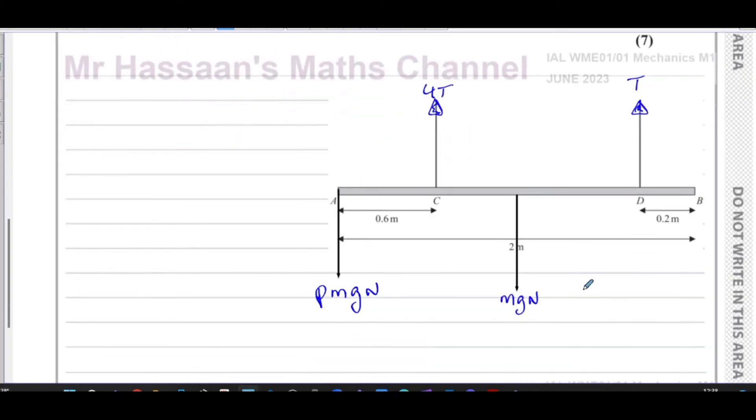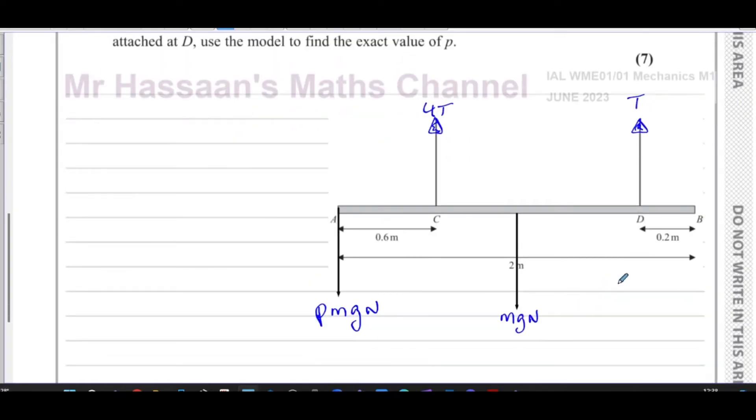We're going to use this model to find the exact value of P. What we can do here is make two equations. One equation from the fact that the forces acting upwards, which are 4T plus T, are equal to the forces acting downwards. So we can say 5T equals Pmg plus mg.